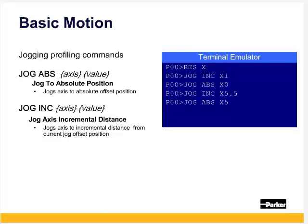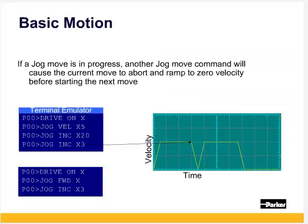Jog moves are not limited to only velocity moves and you can program distance-based moves with jog ABS for jogging to an absolute position or jog INC for jogging an incremental distance from the current jog offset position. If a jog move is in progress, another jog move command will cause the current move to abort and ramp to zero velocity before starting the next move.